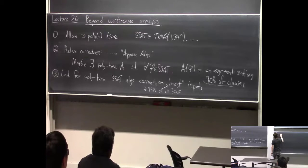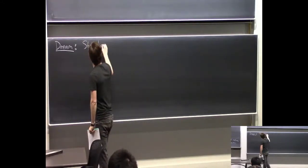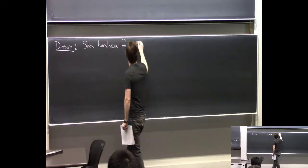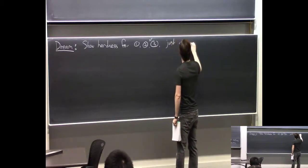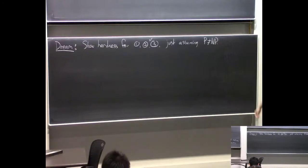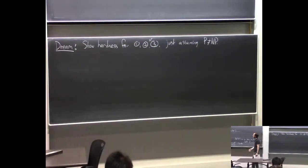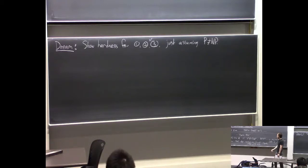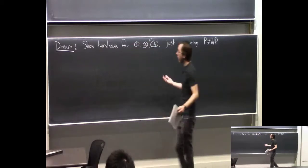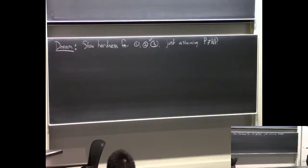The dream scenario would be to show hardness for any of these — variations of options one, two, or three — just assuming P does not equal NP. People are generally willing to assume P does not equal NP; it tells you that you cannot have a perfect algorithm that's polynomial time and always correct on all instances. It'd be cool if you could show that P≠NP further implies stronger statements — like solving SAT in a little bit super-polynomial time is impossible, or solving SAT on 99% of instances is impossible. That would be great.